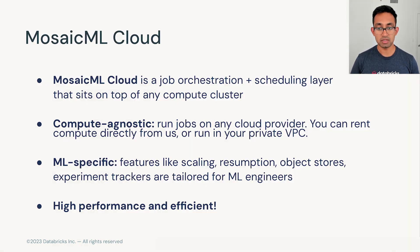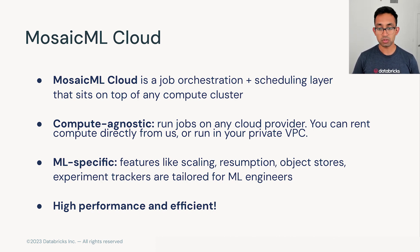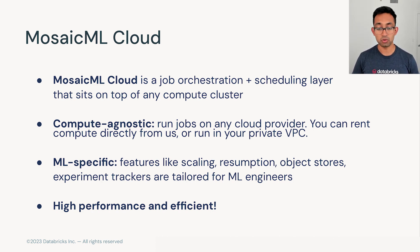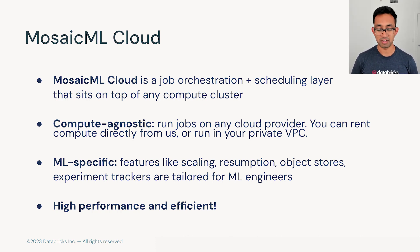At MosaicML, we decided to build a product that specifically addresses these challenges for ML engineers, and we call it the MosaicML Cloud. It's an orchestration and scheduling layer that sits on top of any GPU compute cluster. Whether it's yours or you rent compute from us, you can submit jobs seamlessly to any one of them. It addresses multi-node training, resuming runs when they fail, supporting object stores for data set streaming and checkpointing, and experiment trackers such as MLflow and Weights and Biases. And it's high performance — we tune it for all the different cloud providers out there.